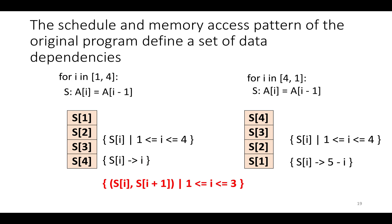To check the legality of the program, we need some notion of what makes a transformation legal. The schedule and the memory access pattern of the application together define a set of data dependencies. The data dependencies are a set of pairs of statements where the statement on the left-hand side sends data to the statement on the right-hand side. In this function, we have a sub i equals a sub i minus one, so statement one writes a one, and then statement two reads location a two minus one, which is one. So statement one sends data to statement two, and the entries in the data dependencies would be pairs s_i and s_{i+1} for i between one and three.